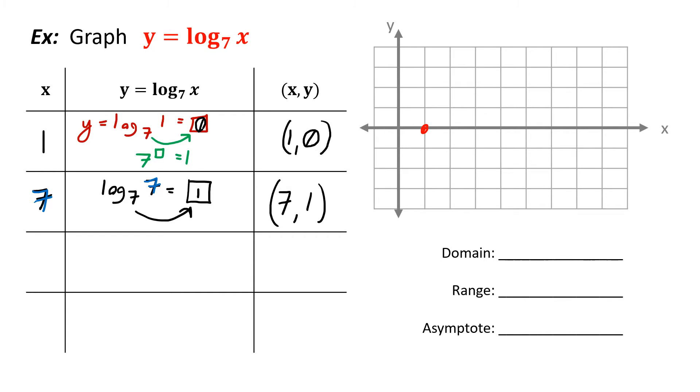Another good option is the reciprocal of the number we just used, so 1 over 7. Log base 7 of 1 over 7. So ask yourself, 7 to what power equals 1 over 7? And the answer is negative 1 because they're reciprocals.